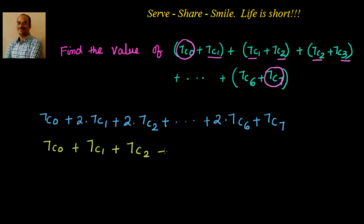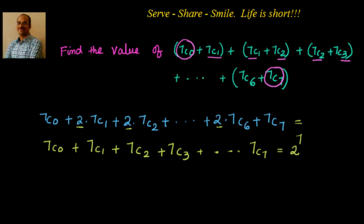We know the formula that 7C0 plus 7C1 plus 7C2 plus 7C3 up to 7C7 is equal to 2 power 7. At the end of this problem I will also explain how this formula is derived — it's very easy. Now, if I want to take 2 as a common factor, I see that 7C0 and 7C7 appear only once while the remaining terms appear twice.